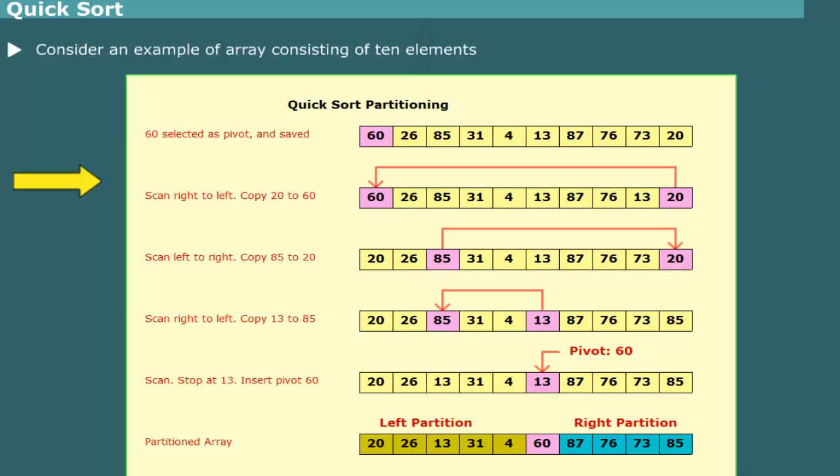The array is scanned from right to left, beginning with element 20, skipping all elements that are greater than the pivot 60. Since 20 is smaller than pivot, we stop at the element 20. The element 20 is copied into the element pointed to by the left pointer, that is element 60.